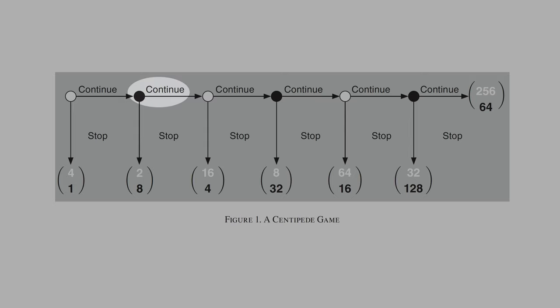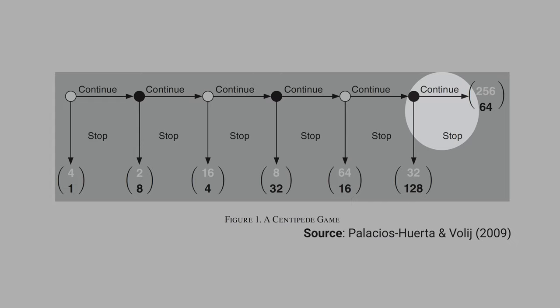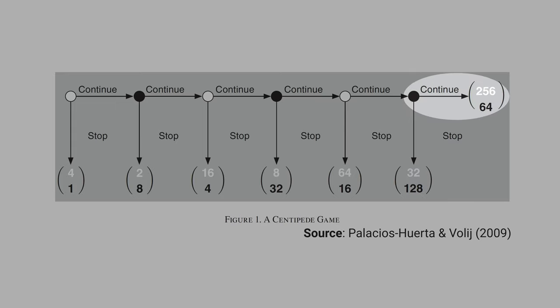If the black player decides to continue, now the white player has a choice to continue or stop. At the last node of the game, the black player can continue or stop. If he stops, he'll get $128, but if he continues, he will get only $64.